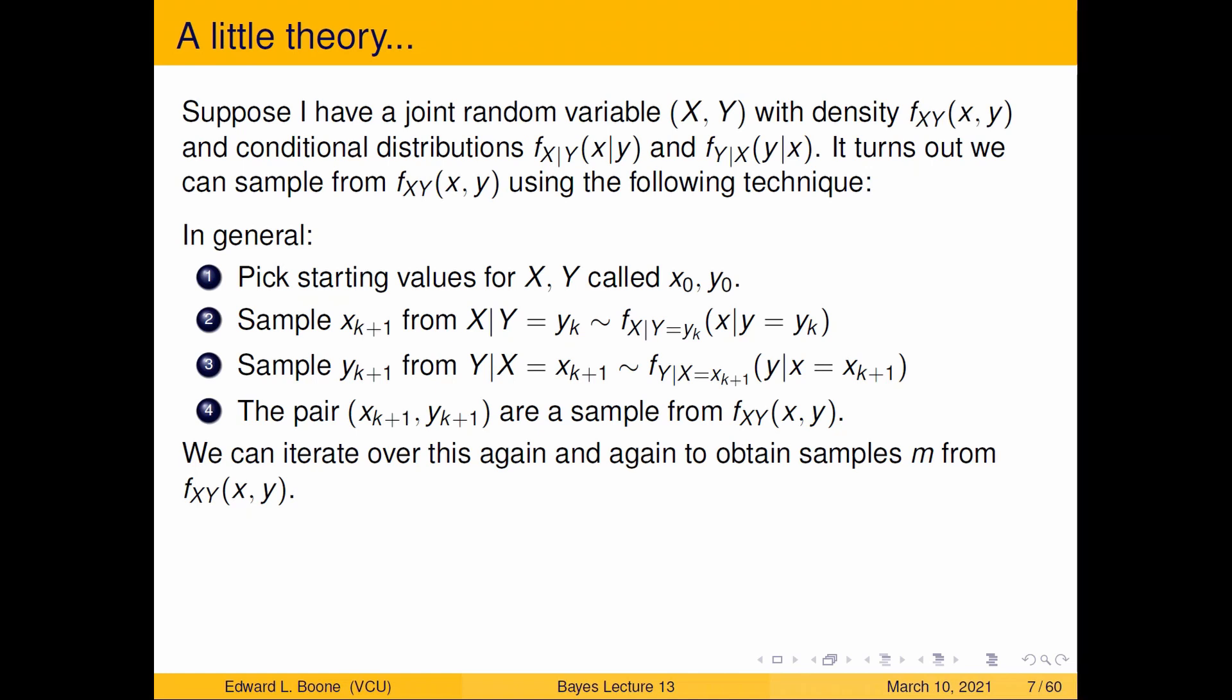There's a lot more detailed versions of this, but this is the simplest one. Pick starting values. This is going to be where we start sampling from, and what we do is we just alternate sampling between the two using their conditional distributions. Once I've pulled the two samples, the two together form a sample from the joint, and we do this again and again to create a chain of samples of size m from our posterior distribution.